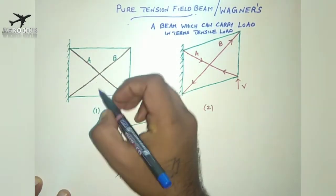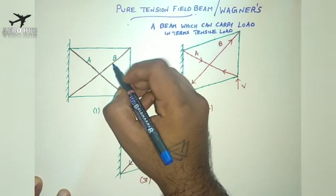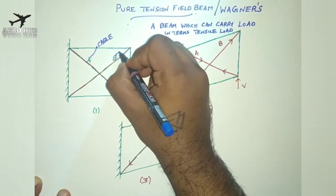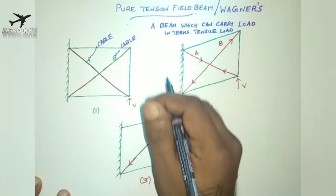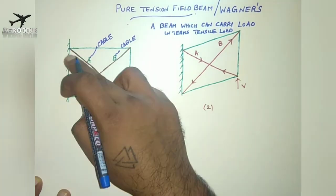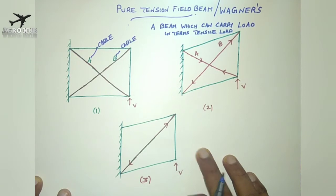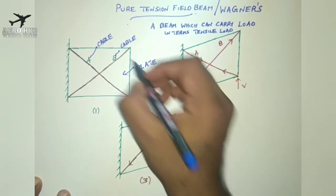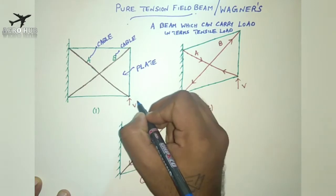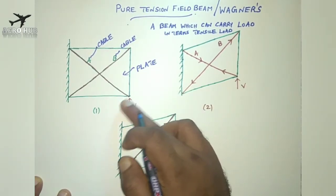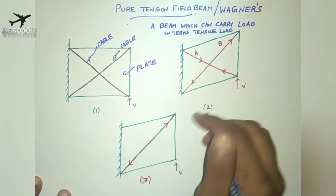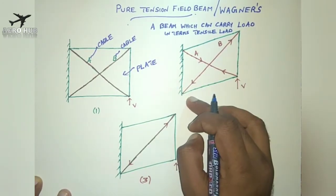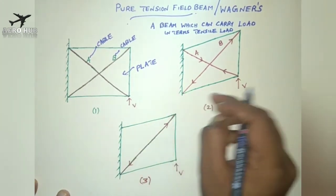Now imagine a thin plate. We have a strut A and strut B — it is like a cable. We have a cable structure A and B, and this cable structure is connected at both ends of this particular plate. We have two cables A and B connected at the two ends of the plate. Now I am applying a shear load of capital V at one end of the plate.